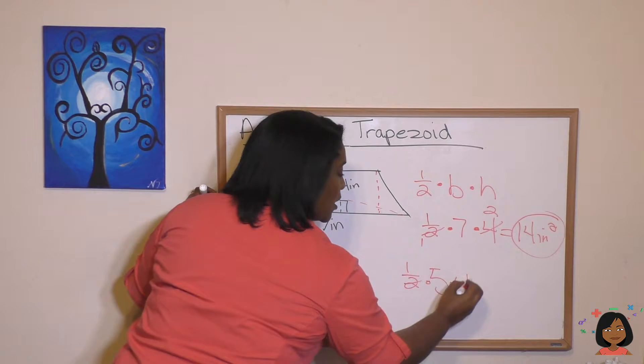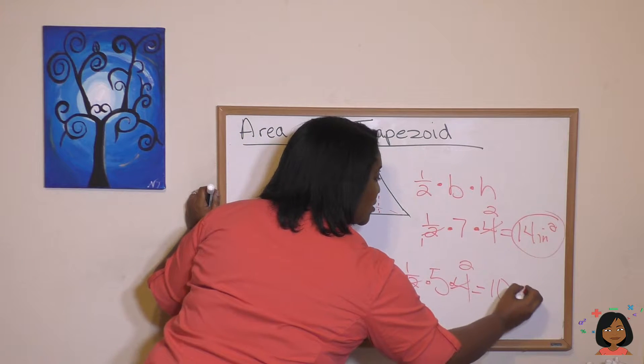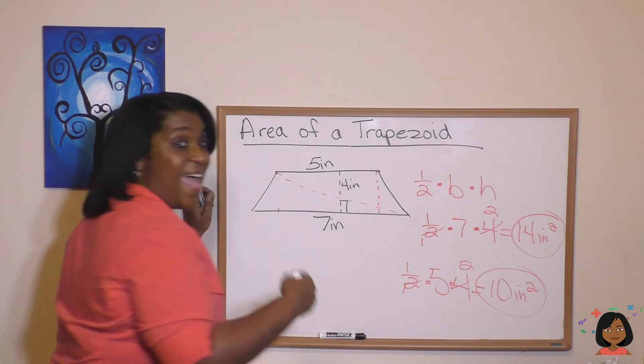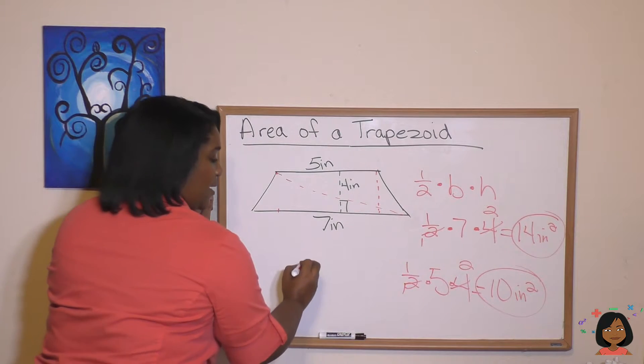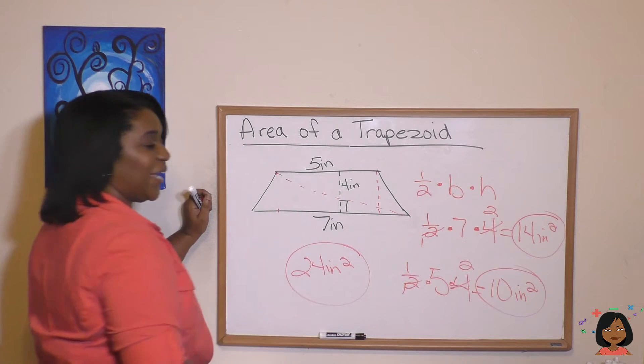Here we go. Let's cancel here. And we have 10. 14 inches squared. Add the two of them together. 14 plus 10 gives me 24 inches squared as my area.